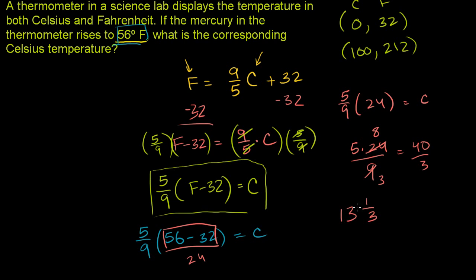And we can even check that. 3 times 13 is 39, plus 1 is 40. And if this wasn't obvious to you, you could take 3 into 40. 3 goes into 4 one time. 1 times 3 is 3. Subtract, you get 1, bring down that 0. 3 goes into 10 3 times. 3 times 3 is 9. You subtract, you get a remainder of 1. So it's 13 and 1 third. So this is 13 and 1 third degrees Celsius. So if it's 56 degrees outside in Fahrenheit, it's 13 and 1 third degrees in Celsius.